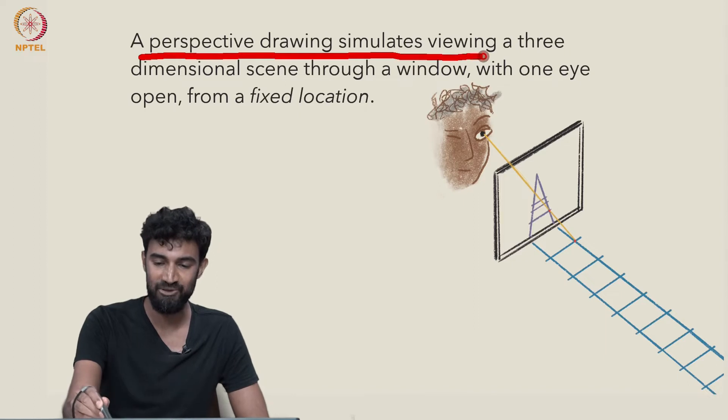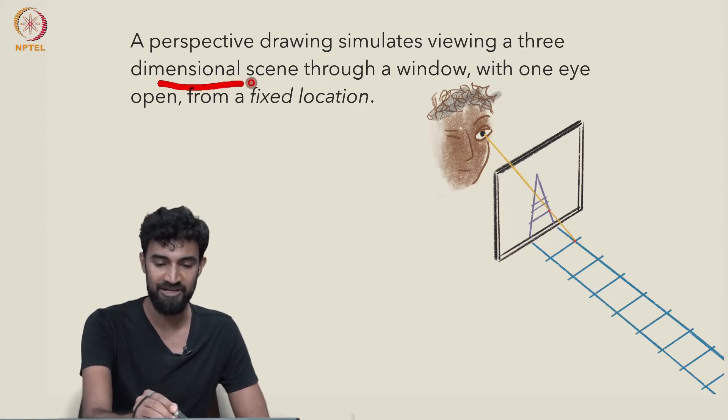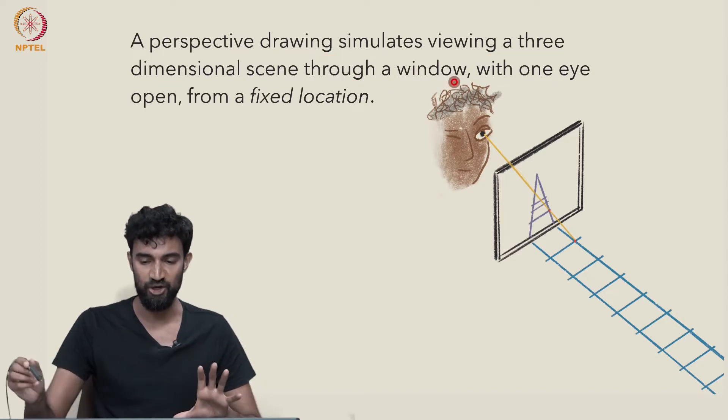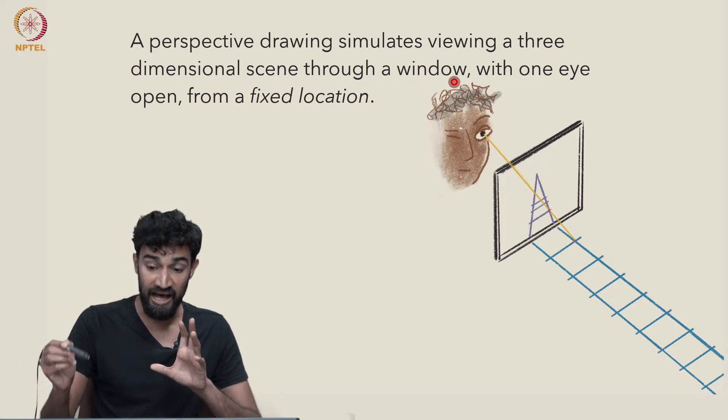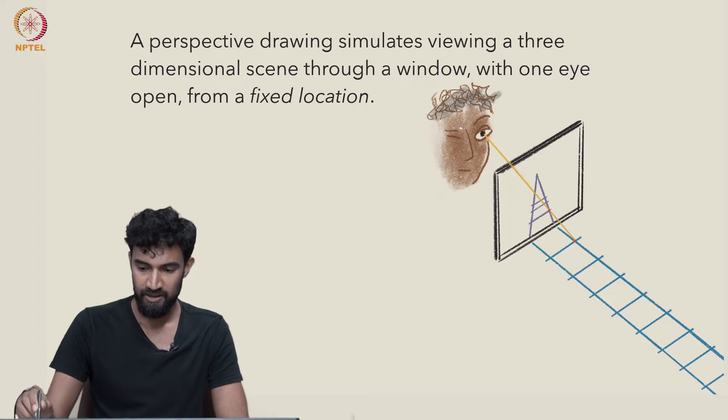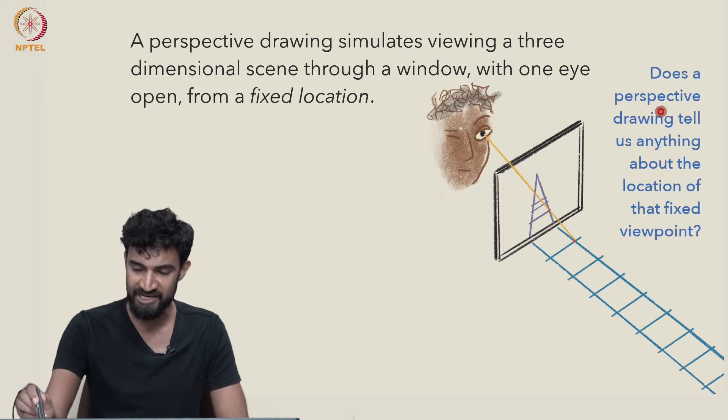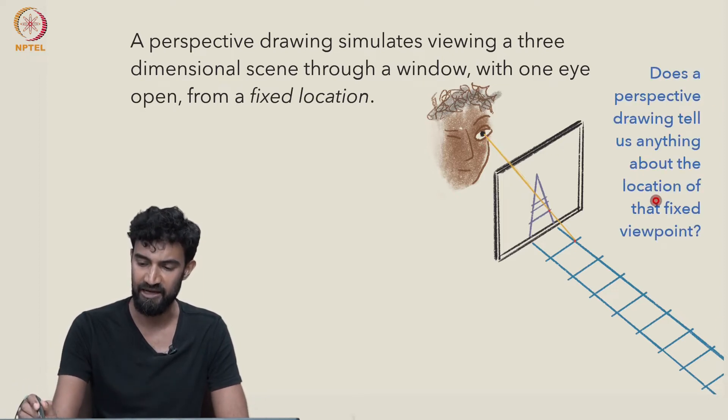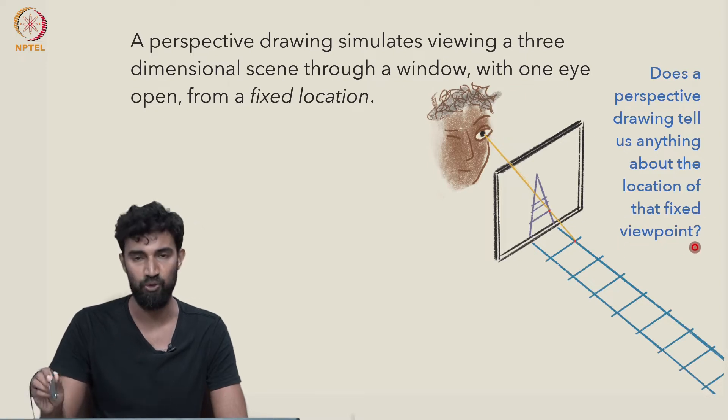A perspective drawing simulates viewing a three-dimensional scene through a window with one eye open in a fixed location. But does a perspective drawing tell us anything about the location of that fixed viewpoint?